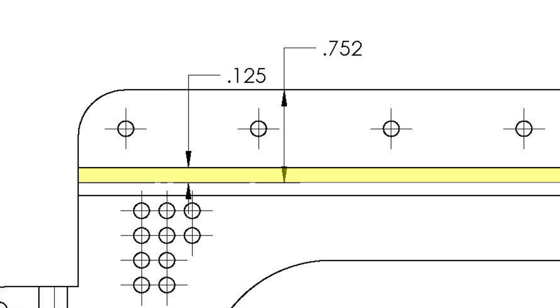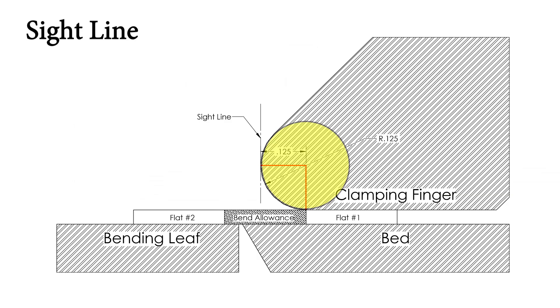By looking straight down from above the brake, we can align the leading edge of the radius finger with the sight line while clamping the flat layout in position. By default, this positions the beginning of the bend allowance at exactly the beginning of the radius on the clamping finger.